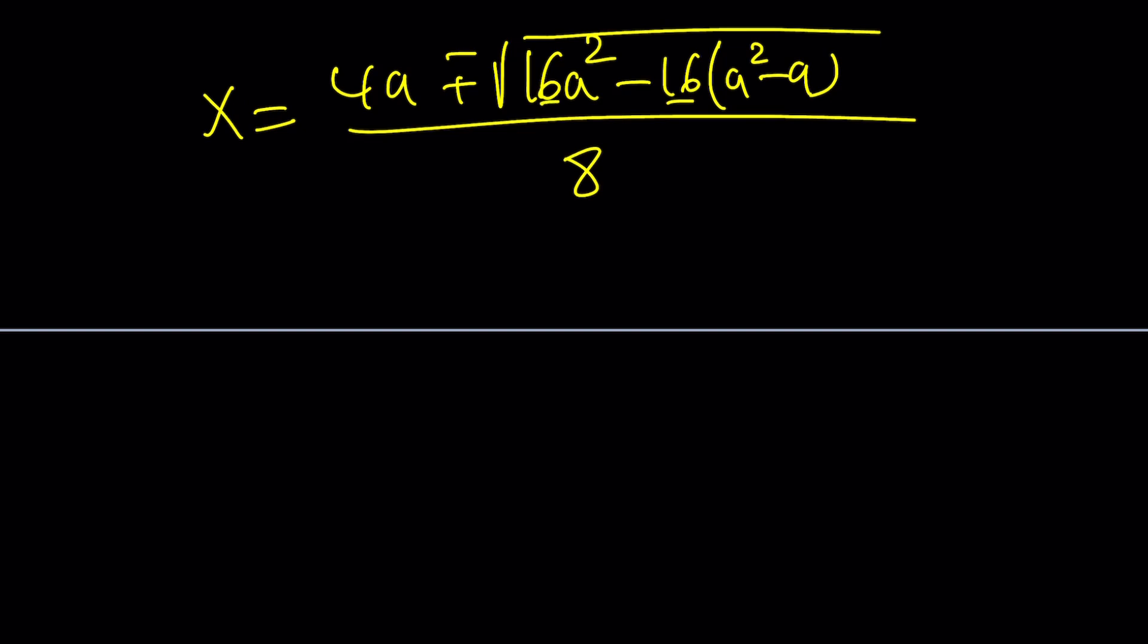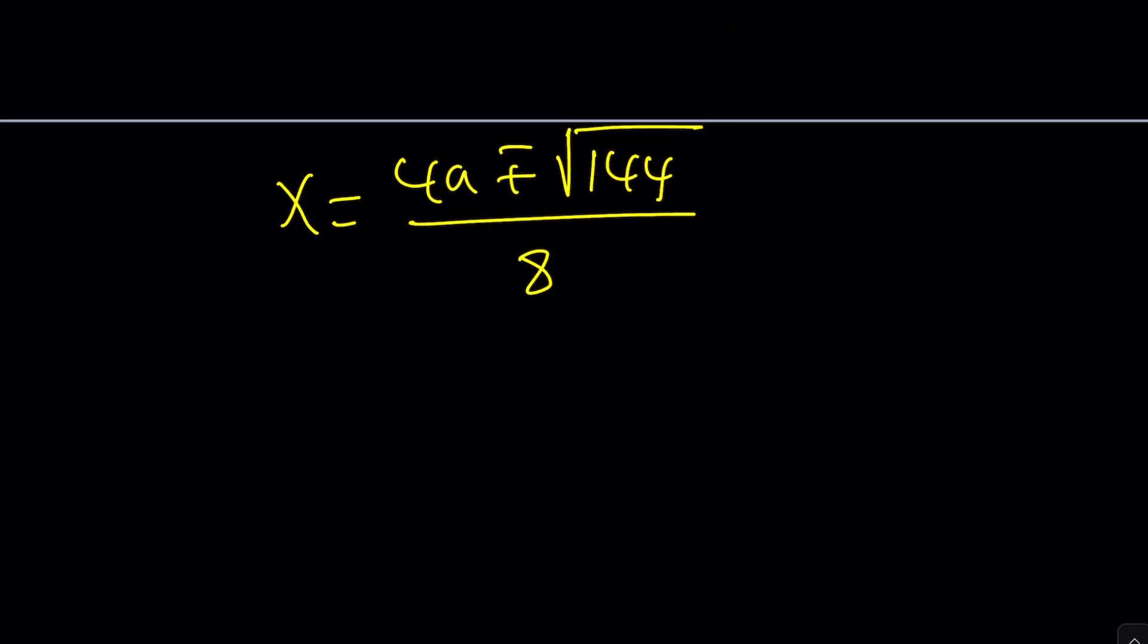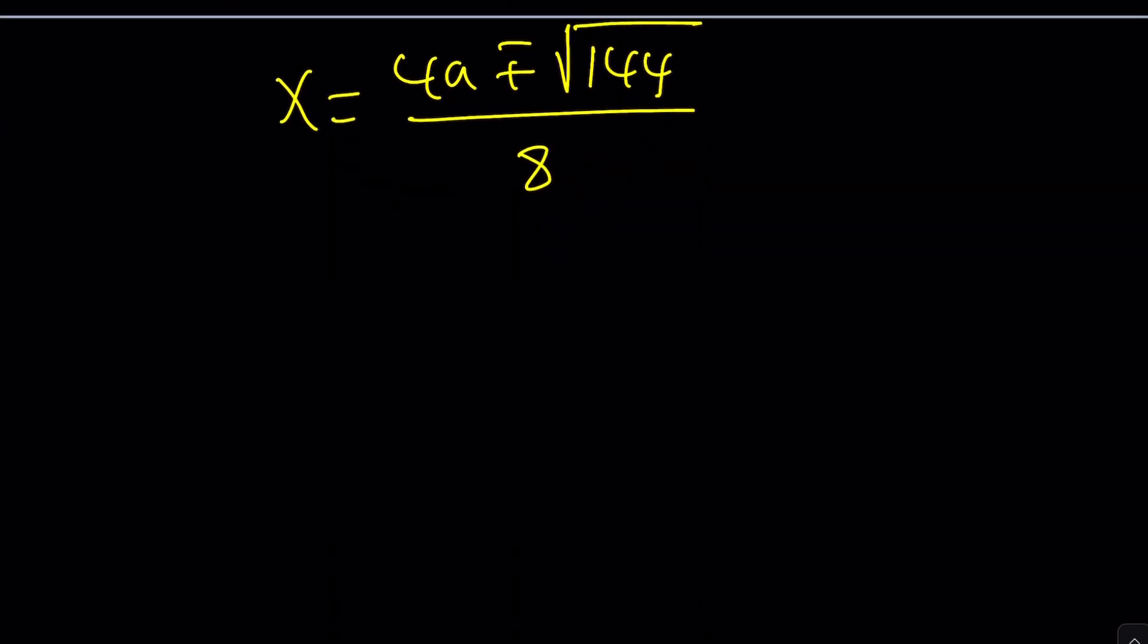So x from here is going to be negative b plus minus the square root of b squared, which is 16a squared minus 4ac. That's going to be 16 times the quantity a squared minus nine. And then all of that is divided by eight. We can go ahead and simplify it. We could also simplify the radical a little bit. 16a squared minus 16a squared plus 144. We do know that the square root of 144 is 12. And then once you divide everything by 4, you're going to get a plus 3 over 2 and a minus 3 over 2, which is the exact same values that we found with the first method.